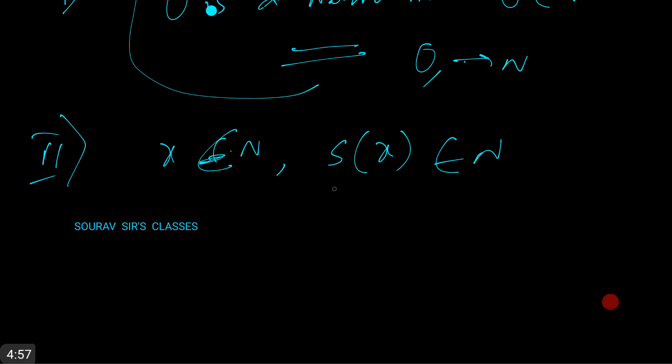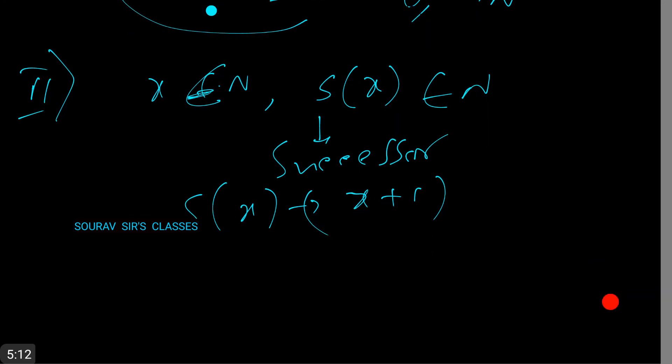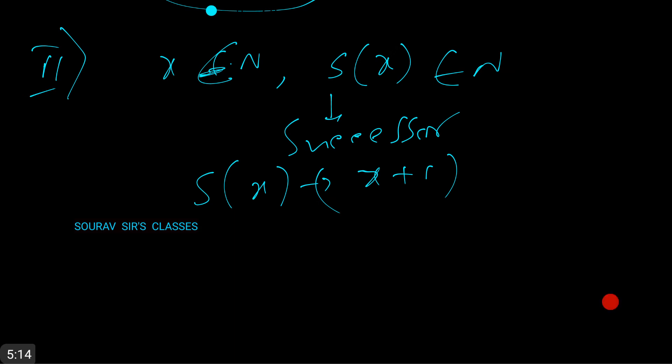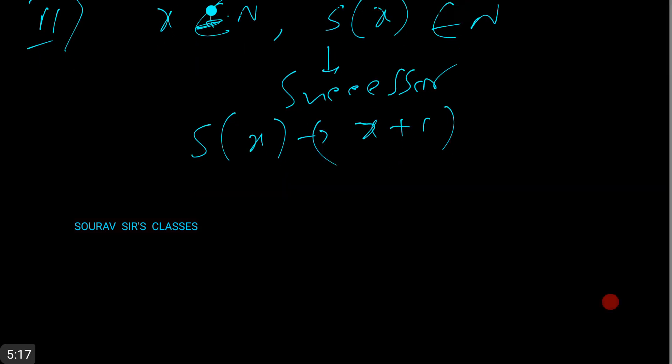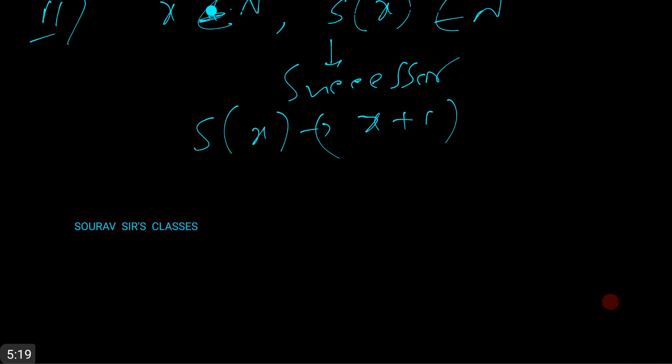Intuitively we should think that S(x) is x plus one. Of course we cannot formally define it in that way yet because we do not know what plus means. So at this point we are still quite far away from having the natural numbers as we know them.